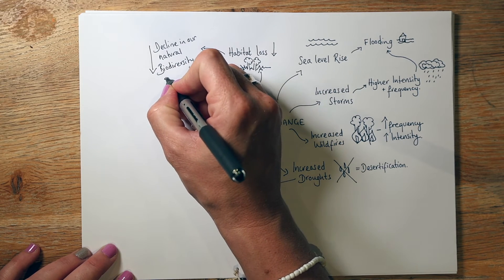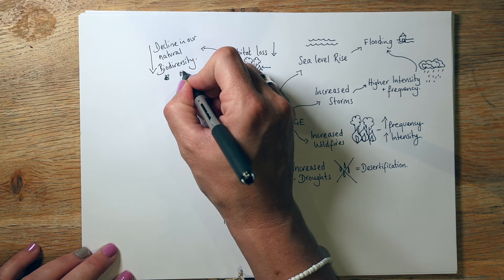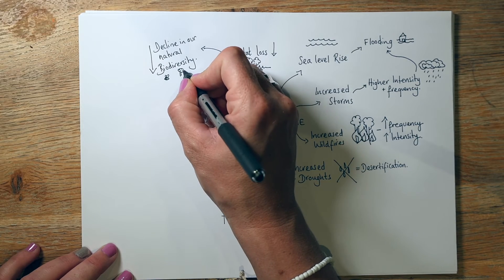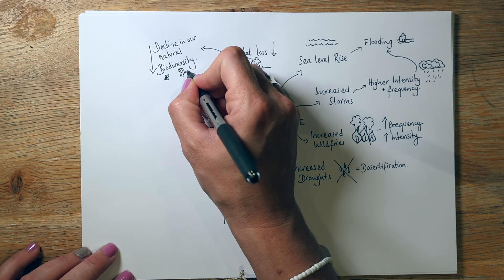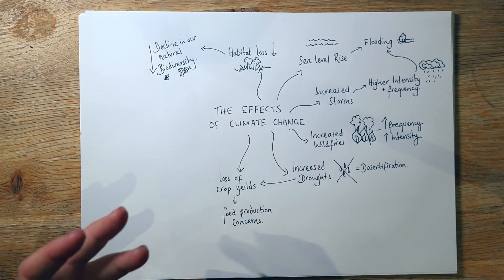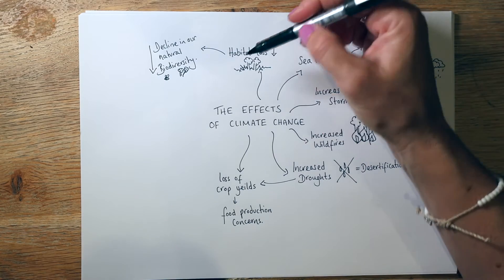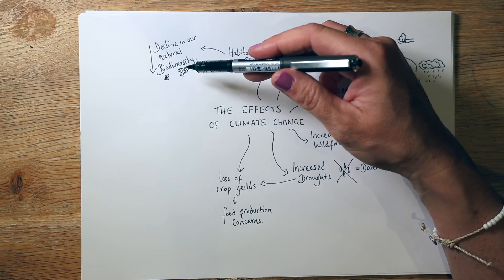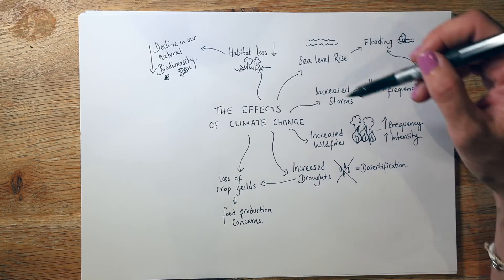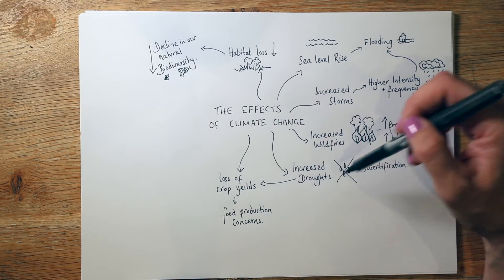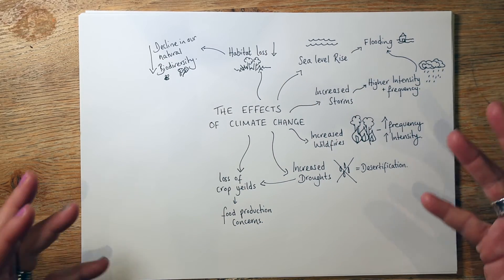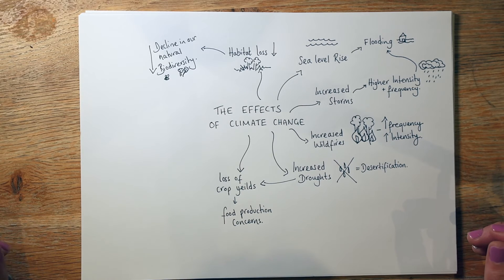Biodiversity basically means the range of plants and animals — the range of species that we have on Earth. It's what makes our Earth so amazing and what helps our ecosystem be as strong as it is. It's everything from bees and plants to all these different species that we rely on to create our ecosystem that we are a part of — not separate from, but a part of. Habitat loss and a drop in biodiversity are really, really significant, and when you see them laid out like this, it brings home just how significant it truly is.